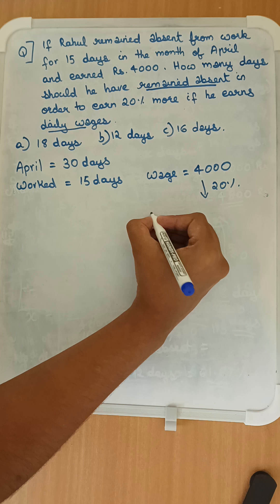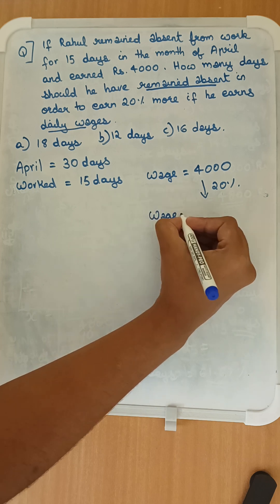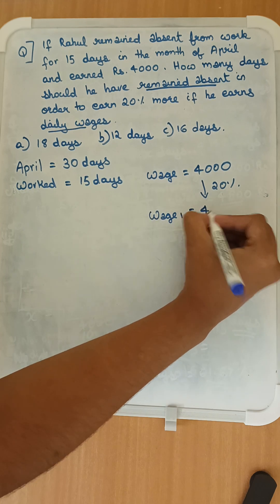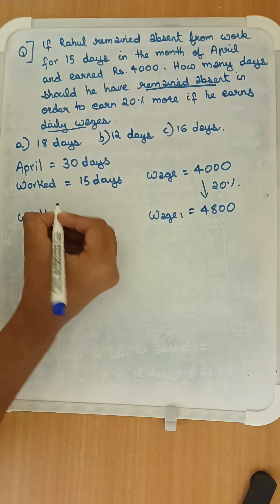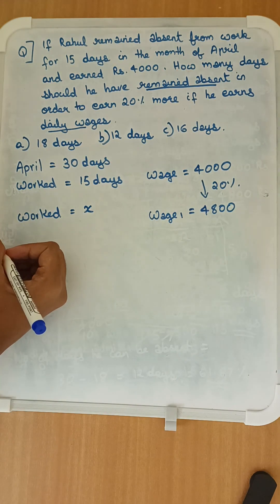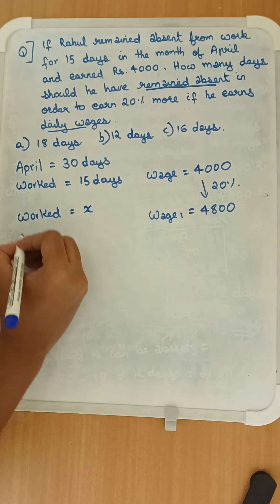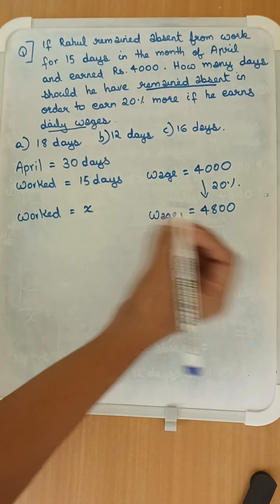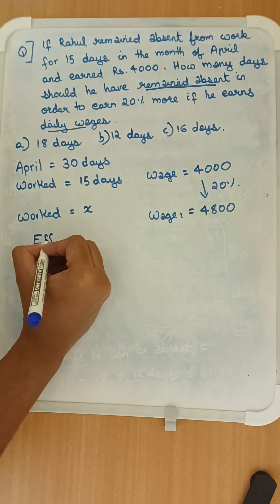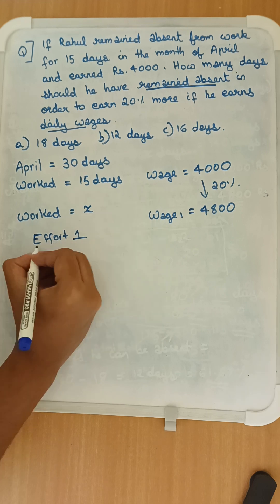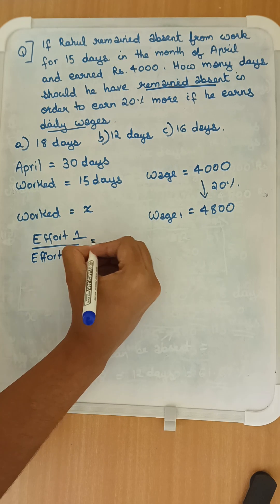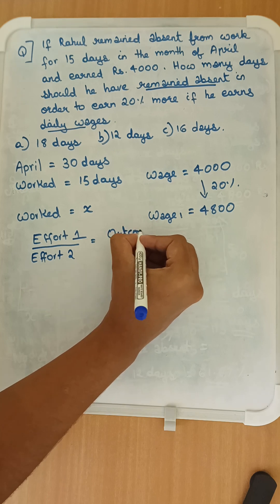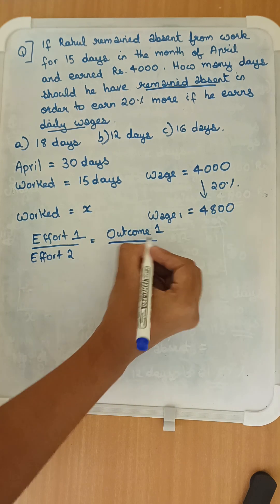So to earn the new wage of 4,800, how many days should Rahul have worked? Now we know the formula, a quick way to remember: effort 1 by effort 2 would be equal to outcome 1 by outcome 2.